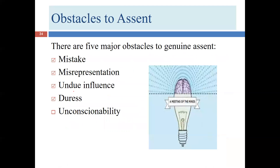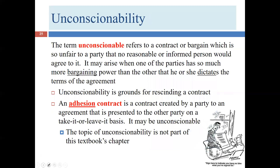We've now covered four of our five obstacles to genuine assent: mistake, misrepresentation, undue influence, and duress. We're going to talk about unconscionability, which we've already discussed at some level of specificity in Chapter 11 in the legality section — we talked about how unconscionable contracts violate public policy. You can see unconscionability as affecting the acceptance element of agreement, or as affecting the legality of the contract. Either way is a legitimate model.